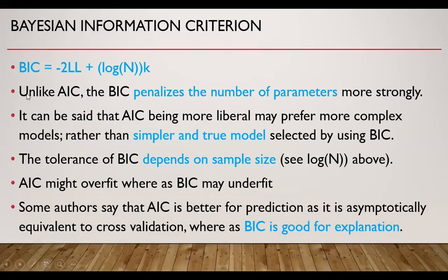Based on Bayesian information criteria, unlike AIC, BIC penalizes the number of parameters more strongly because the number of parameters are multiplied by the log of the number of samples. It can be said that AIC, being more liberal, may prefer more complex models as compared to simpler and true models selected by BIC. The tolerance of BIC depends on sample size. AIC might overfit whereas BIC may underfit. Some authors say that AIC is better for prediction as it is asymptotically equivalent to cross-validation, whereas BIC is good for explanation.